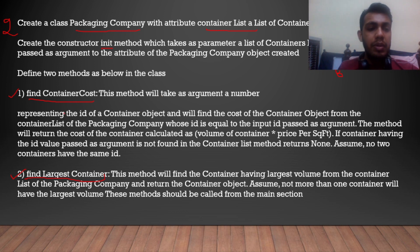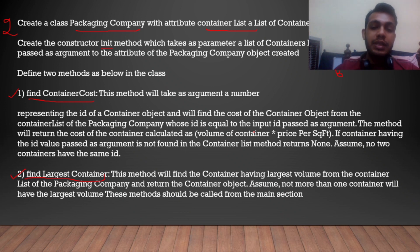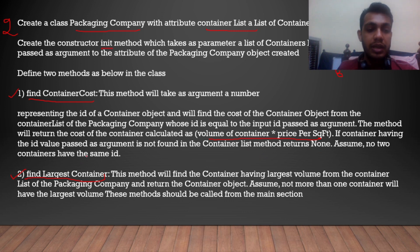The findContainerCost method will take an argument — a number representing the id of the container. This method will find the cost of the container object from the container list of the packaging company, whose id is equal to the input id passed as argument. We have to compare the input id to calculate the container cost. The method will return the cost calculated as volume of container multiplied by price per square feet. If the container with the given id is not found in the container list, return None — assume all ids are distinct.